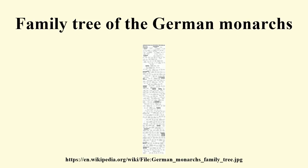The following image is a family tree of every king, monarch, confederation president and emperor of Germany, from Charlemagne in 800 over Louis the German in 843 through to Wilhelm II in 1918.